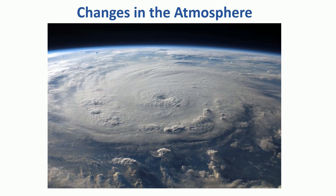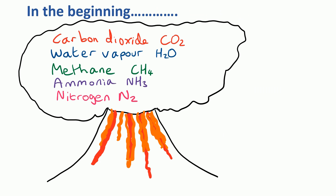Four and a half thousand million years ago — that's 4.5 billion years ago — in the beginning there was an intense amount of volcanic activity, with volcanoes covering a lot of the surface of the earth, and they were churning out carbon dioxide, water vapor, methane, ammonia, and nitrogen.